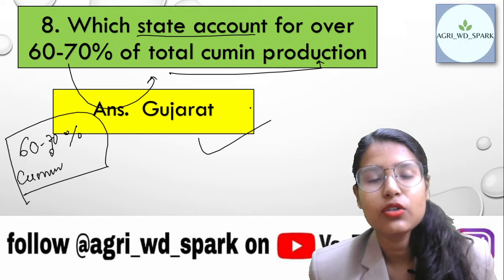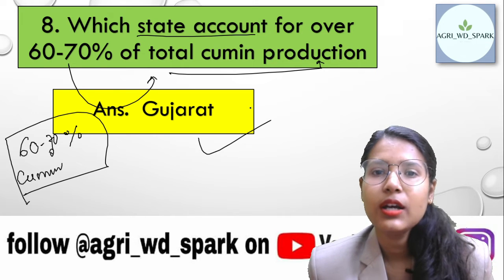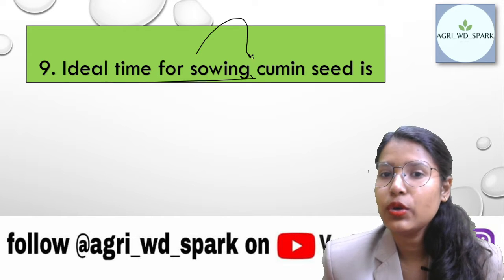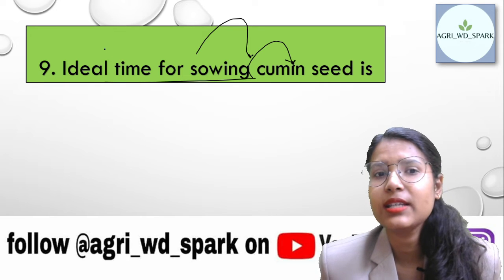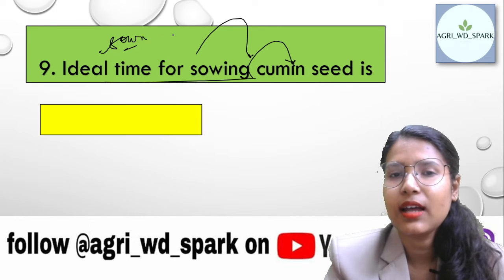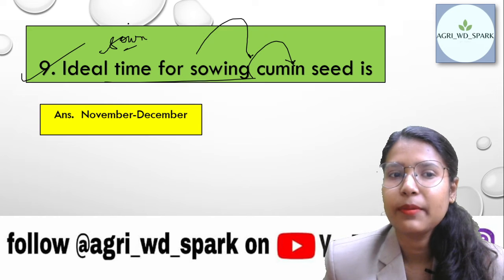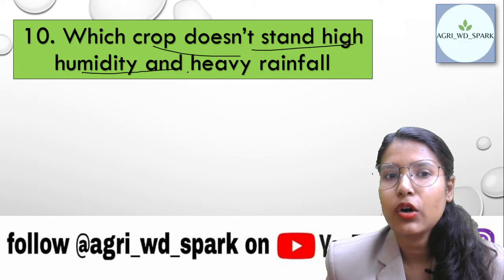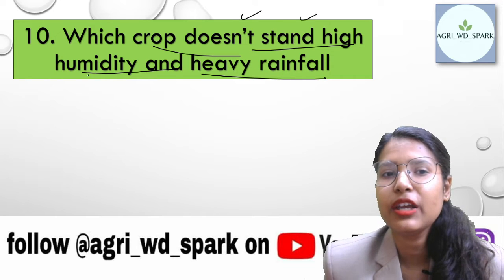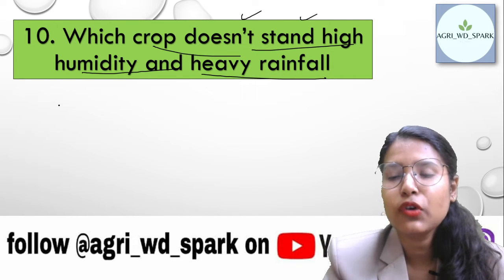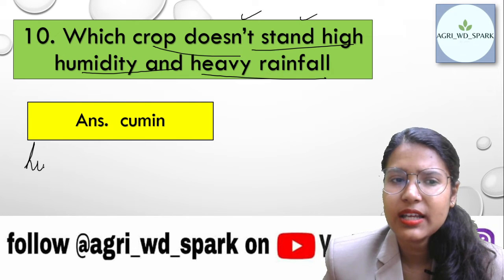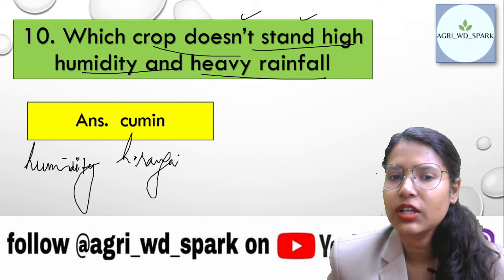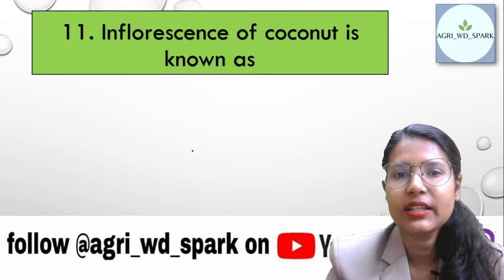Gujarat is responsible for 60 to 70 percent of your total cumin production. The ideal time for sowing cumin seed is November to December. Also, cumin is a crop that does not stand high humidity and heavy rainfall — if there is too much humidity and heavy rain, the cumin crop will suffer losses.